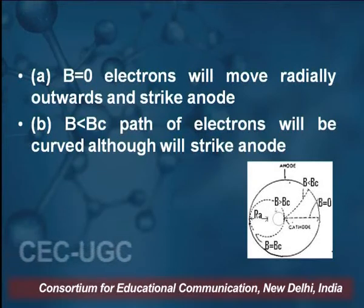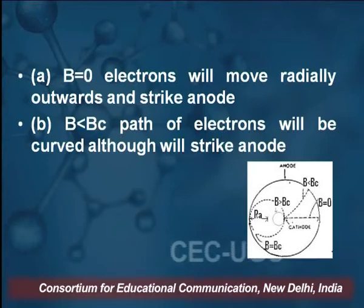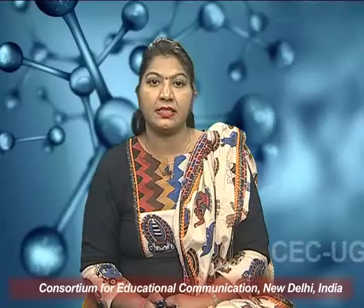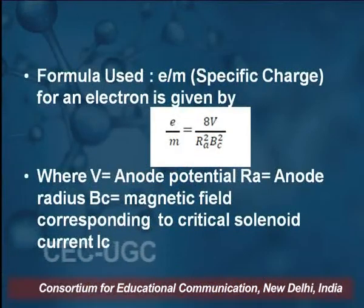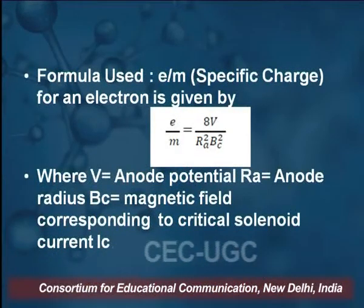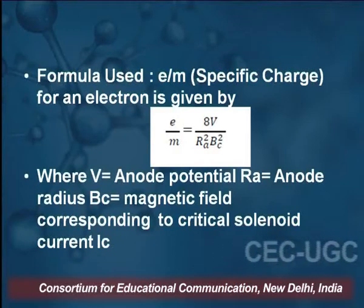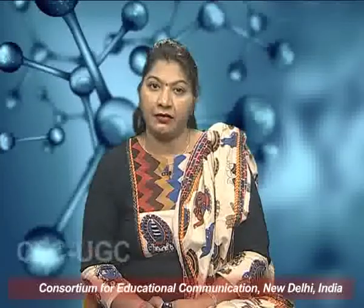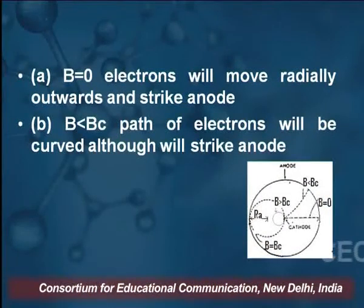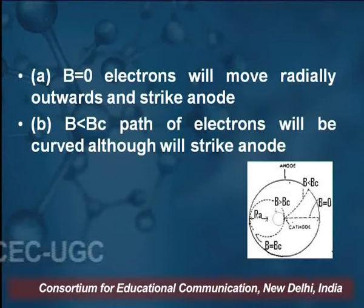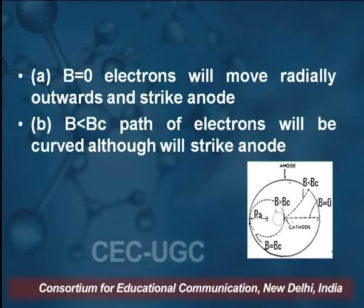In the second condition, B is less than Bc. Bc is the magnetic field corresponding to the critical solenoid current Ic. If the magnetic field we are applying is less than the critical field Bc, then the path of the electron will be curved, although it will still strike the anode, but the path will be in the form of a curve.